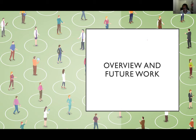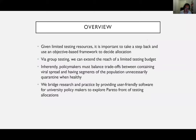In summary: in the regime where we have an extremely limited number of testing resources, it's important to take a step back and use an objective-based framework to decide allocations. The group testing primitive can be vastly useful for expanding the reach of a limited testing budget. Policymakers have to balance trade-offs between containing the virus and affecting the fabric of society. We can bridge research and practice by providing user-friendly software for university policymakers to explore these trade-offs in a principled, intuitive way — understanding what the trade-offs are between different allocations.